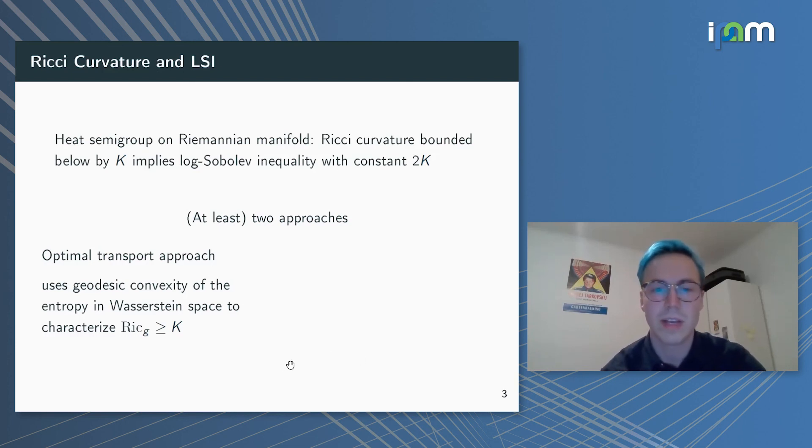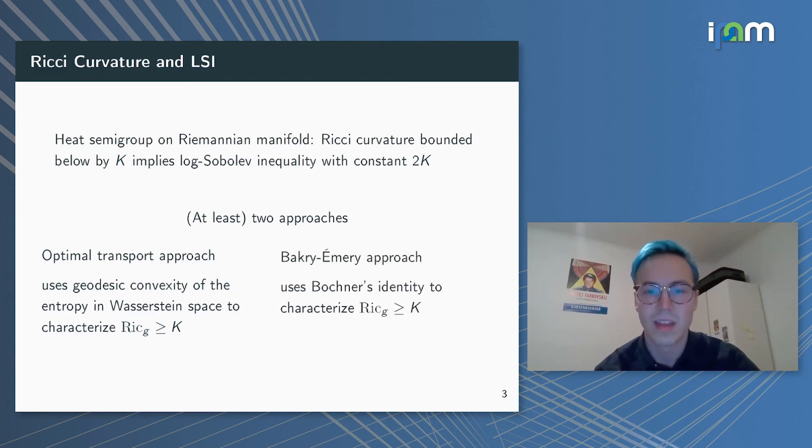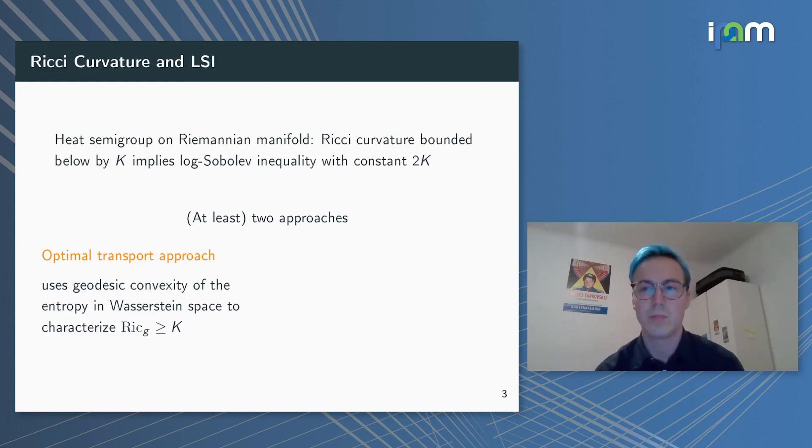There are at least two approaches to prove such a result. One of these approaches relies on optimal transport and uses that Ricci curvature bounds of a manifold can be characterized by certain convexity properties of the entropy with respect to the L2 Wasserstein distance. The second approach goes back to Bakry and Émery and relies on the fact that one can use Bochner's identity to characterize Ricci curvature bounds in terms of their Γ and Γ₂ calculus. What I want to focus on here is the optimal transport approach.